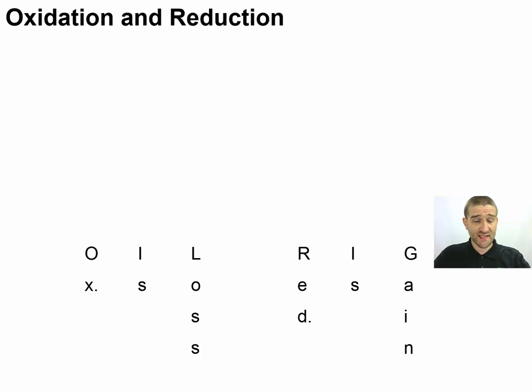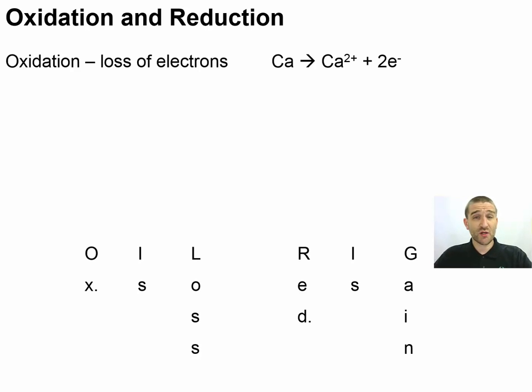Let's establish some of the jargon for oxidation and reduction, redox reactions. I want to start out by giving you the mnemonic that you can use to keep track of this: OIL RIG. Oxidation is loss of electrons, you see that here, and reduction is gain of electrons.